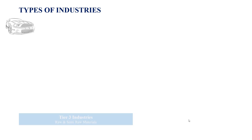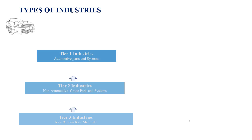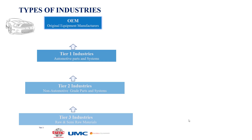Let's understand how they manage these things. When it comes to industry types, we have different tiers — Tier 3 at the bottom, then Tier 2, Tier 1, and finally the OEMs at the top. Tier 3 industries supply raw and semi-raw materials to Tier 2 industries, as you can see from the examples shown here.